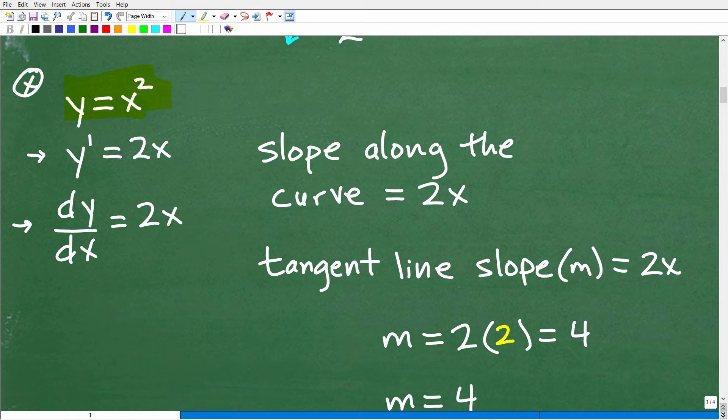So we're gonna be finding y prime or dy/dx, which is the first derivative of this function. So how do I do this? Well, let's take a look right here. We have y equals x squared. So let me just do this right here, x to the second power. So when we find the first derivative, we take this two, this exponent right there, we multiply by the number in front of the x. So what's in front of that x squared? It's just one.